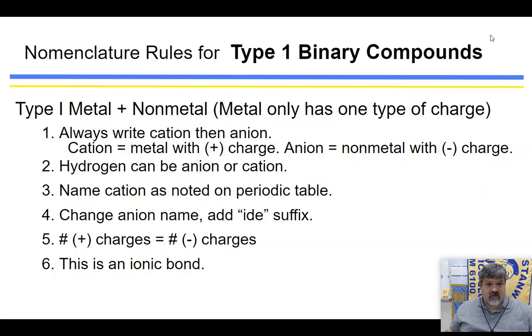So the first thing you have to do is go over the rules. Now again, these rules are in your packet. And again, we're going over type 1 binary. Now binary means two, so we need to make sure that we only have two elements. If there's more than two elements, it's going to be polyatomic.